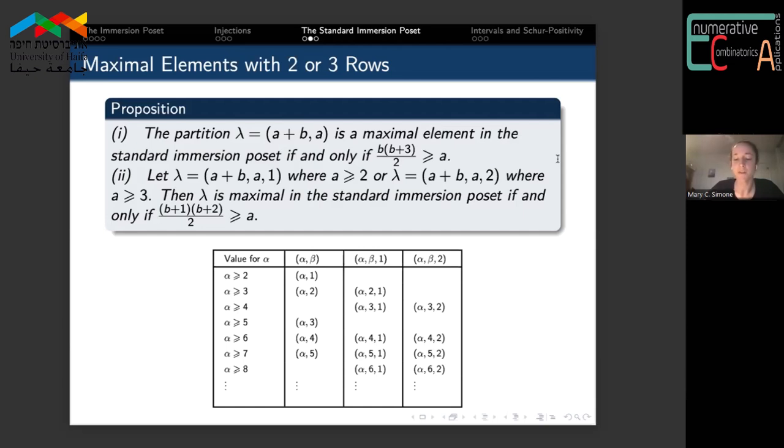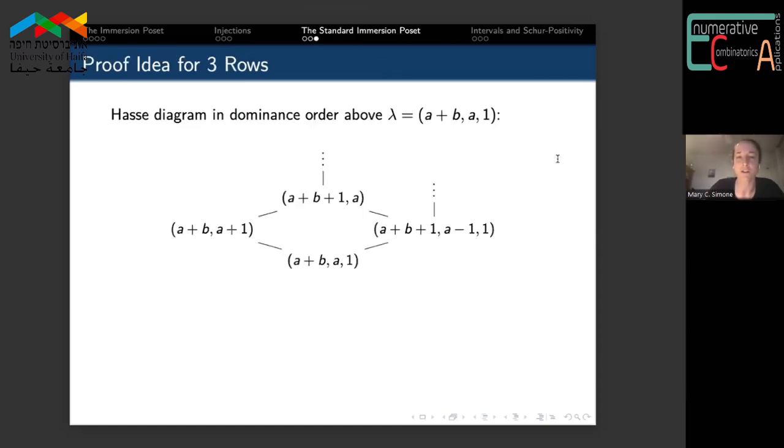Now there's this slight obstacle to our framework for finding maximal elements, which is needing to check all shapes μ which dominate our shape λ that we're interested in. My collaborators Evelyn and Lisa came up with a clever induction argument that helps us bypass a lot of this work. Depicted on the screen, we have a portion of the Hasse diagram for dominance order that sits above this three-row shape, A plus B, A, 1.